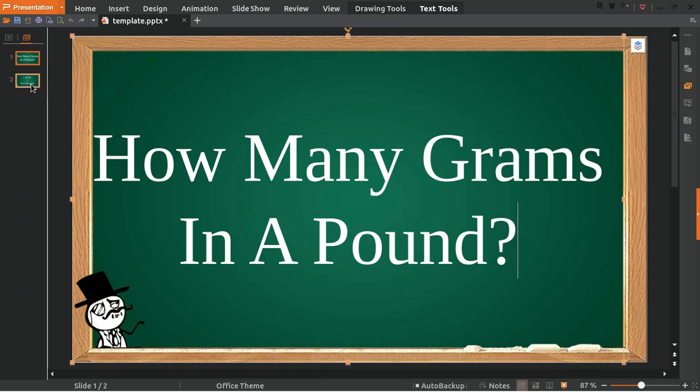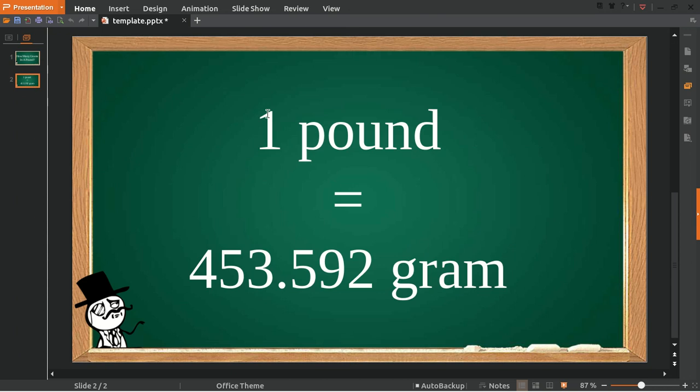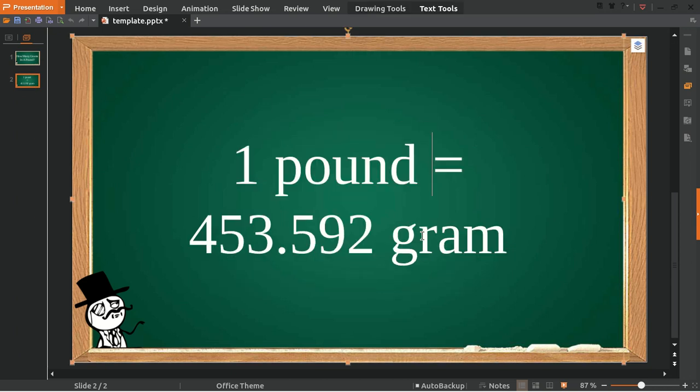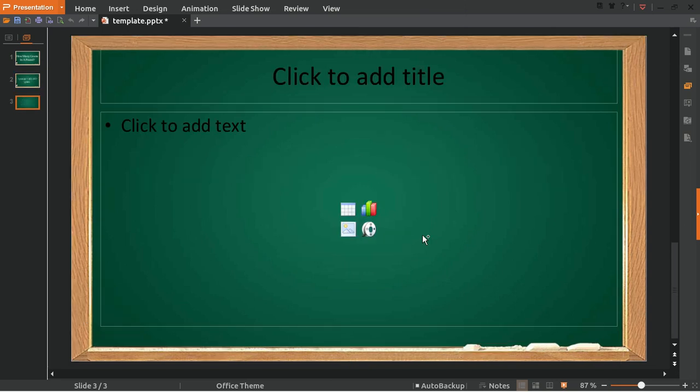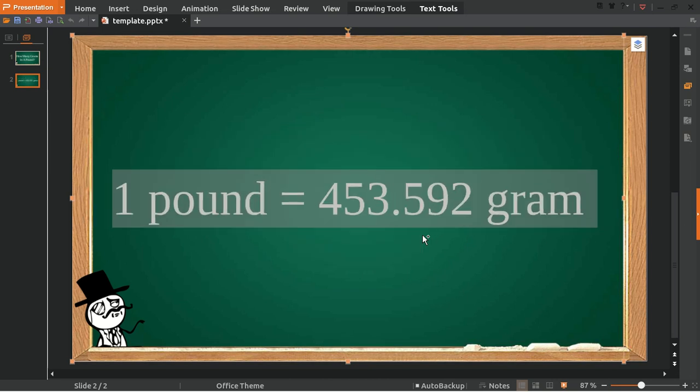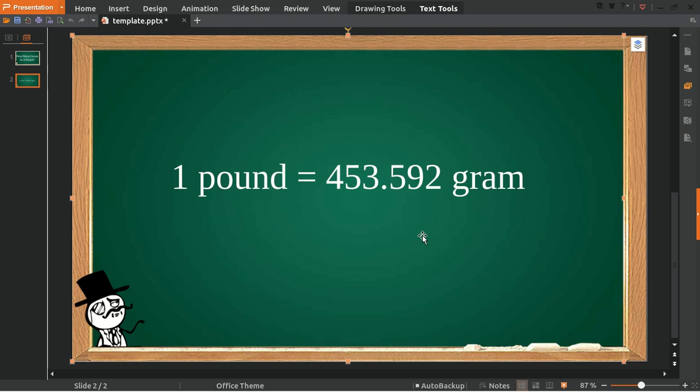I already have the answer. Well, one pound is equal to 453.592 grams. Okay, so here's an example question.